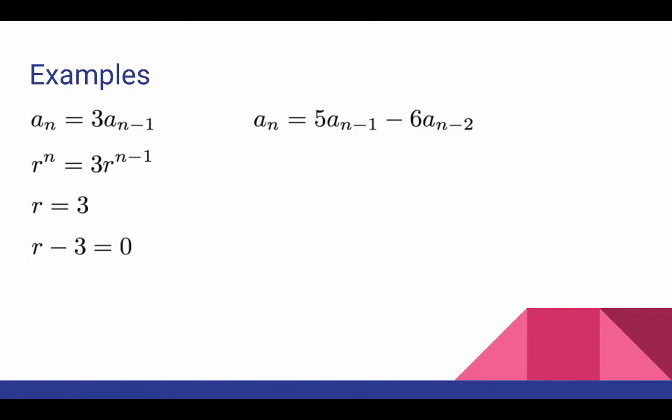The second example here is a linear homogeneous second order recurrence relation. Substitute the r^n formula in for the recurrence relation, then simplify, and then get this equal to zero. The quadratic you see here is the characteristic equation for the second order recurrence relation.